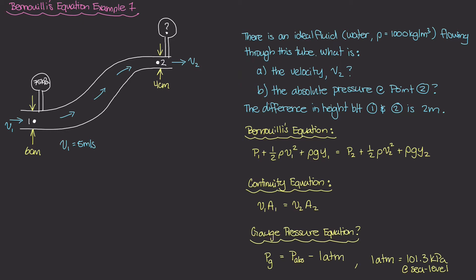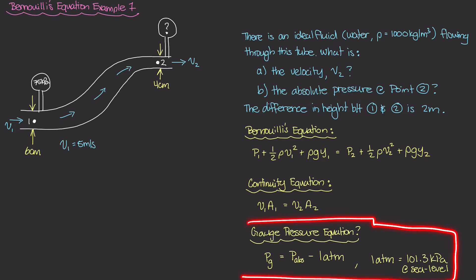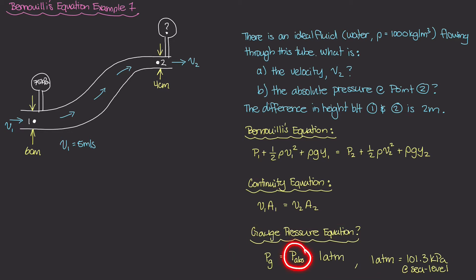There are two parts to this question: first, find the velocity v2 at point 2; second, find the absolute pressure at point 2. The gauge at point 2 will give gauge pressure, and we'll convert that to absolute pressure using the relation: gauge pressure equals absolute pressure minus one atmosphere, where 1 atm equals 101.3 kilopascals at sea level. We'll assume the entire system is at sea level.